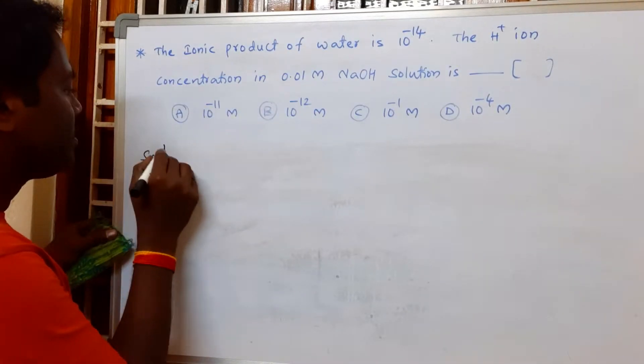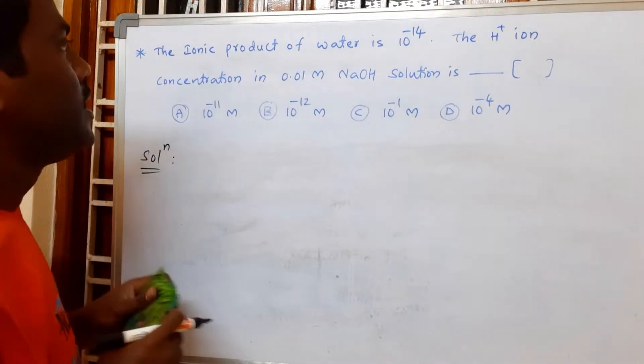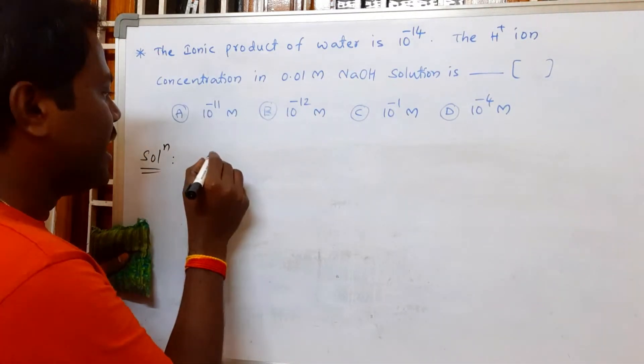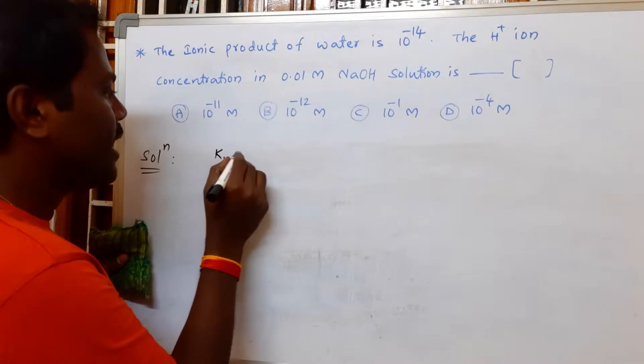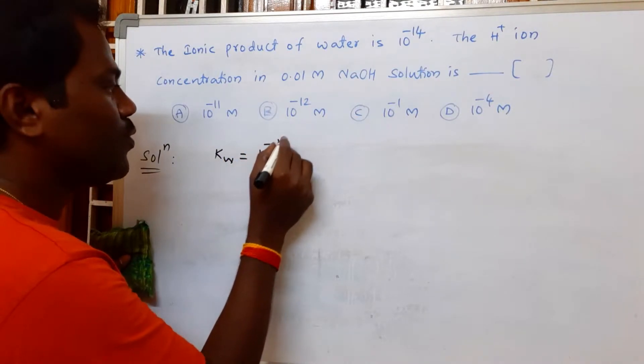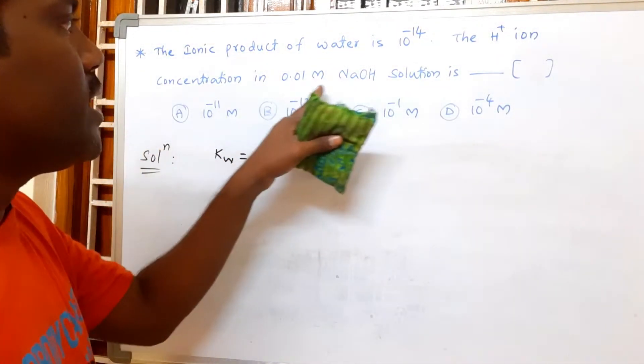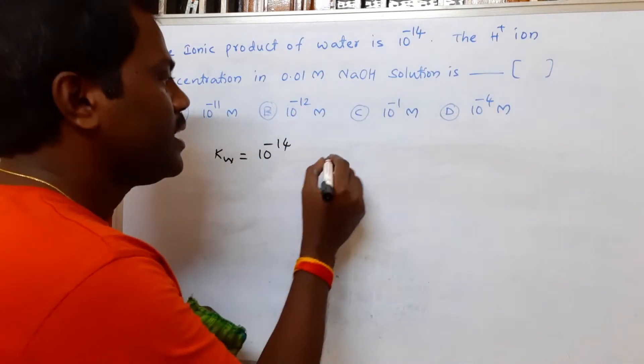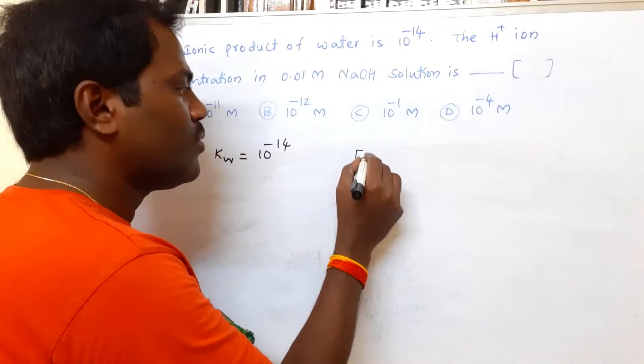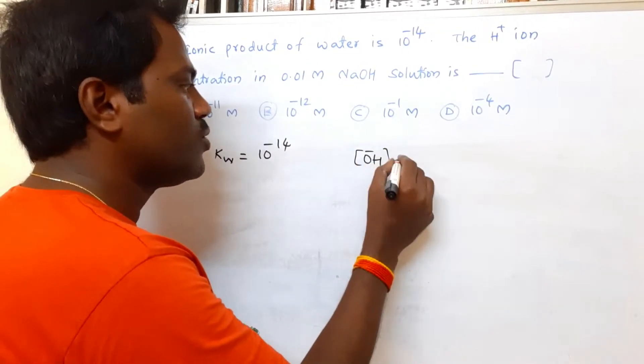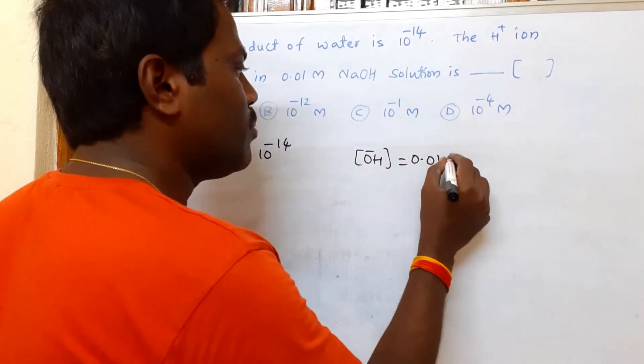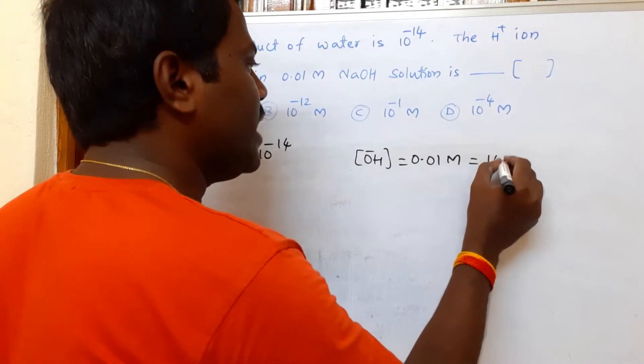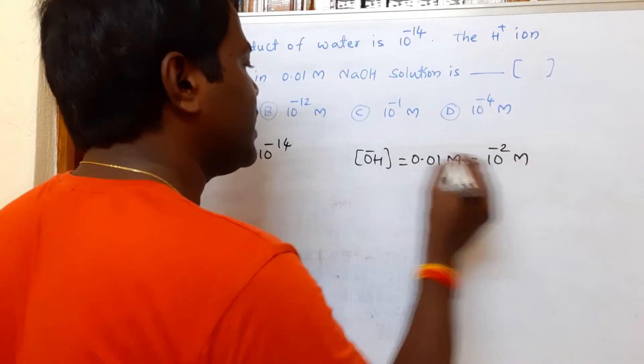Let me explain the solution. The ionic product is KW, which is given as 10^-14. They have also given 0.01 molar NaOH solution, which means the concentration of OH- equals 0.01 molar. We can write this value as 10^-2 molar.